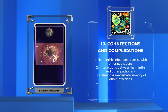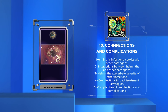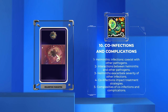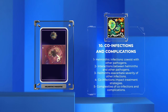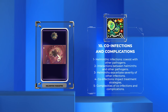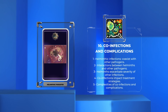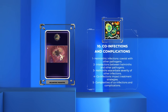Helminthic infections often coexist with other pathogens, resulting in complicated disease scenarios and unique challenges for diagnosis and treatment. In some cases, helminths can exacerbate the severity of other infections by interfering with the host's immune response or enhancing the virulence of the co-infecting pathogen. Co-infections can also impact treatment strategies, rendering certain medications less effective or altering disease progression.